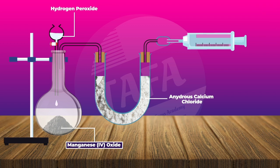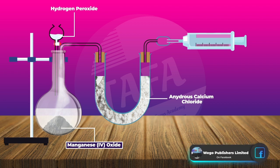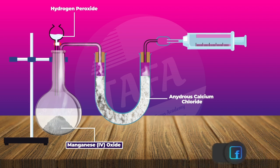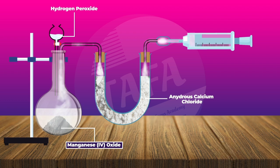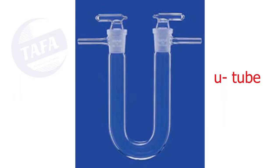The U-tube is an apparatus that, just as the name suggests, is shaped like a U. As you can see in this diagram, you bubble in moist oxygen — it goes through the anhydrous calcium chloride in the U-tube — and then you collect it dry on the other side.